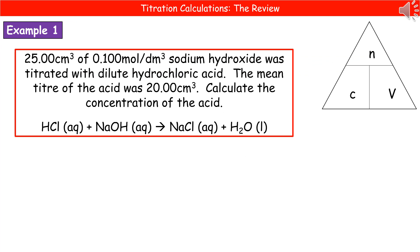Let's have a look at the type of question we could be given. 25 centimetres cubed of 0.100 mol per dm³ sodium hydroxide was titrated with dilute hydrochloric acid. The mean titer of the acid was 20.00 centimetres cubed. Calculate the concentration of the acid. And we've got a balanced symbol equation there.